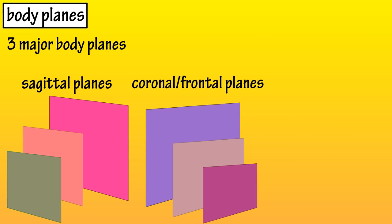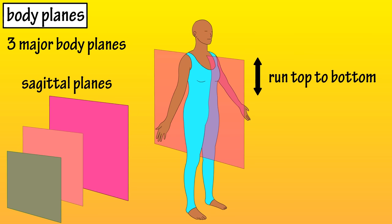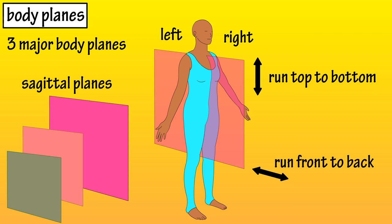There are three major body planes: sagittal planes, coronal or frontal planes, and transverse planes. Sagittal planes run from the top of the body to the bottom and run from the front to the back. So, sagittal planes divide the body into left and right sections.